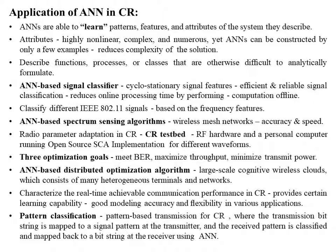ANN has been adopted in spectrum sensing for cognitive radio. An ANN-based signal classifier utilizing extracted cyclostationary signal features was developed earlier. The combination of cyclostationary analysis and ANN provides efficient and reliable signal classification and reduces online processing time by performing a significant amount of computation offline. Further, ANN is used to classify different IEEE 802.11 signals — the complementary code keying signal and the orthogonal frequency division multiplexing signal — based on frequency features. ANN-based spectrum sensing algorithms are also evaluated for wireless mesh networks, where simulation results show better performance in accuracy and speed than the Bayesian-based algorithm.